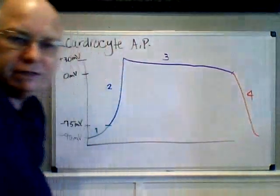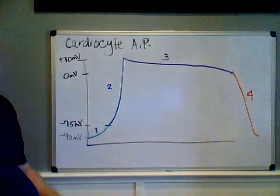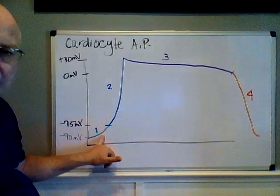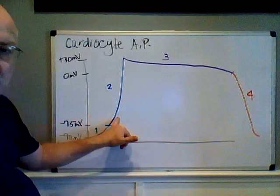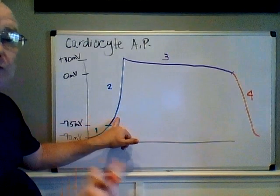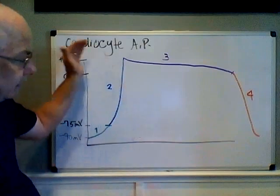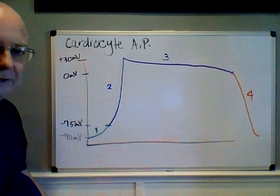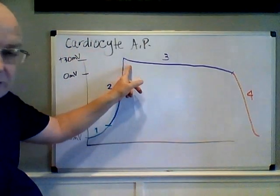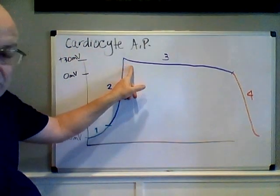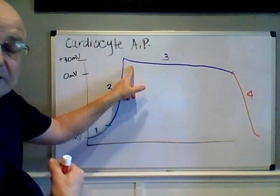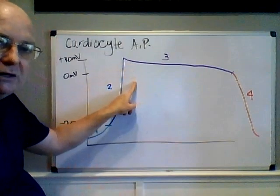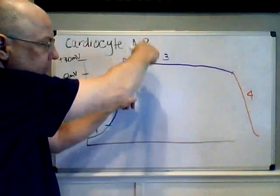The first step is depolarization to threshold due to leaky sodium channels. The second step is rapid depolarization due to voltage-gated sodium channels opening and sodium influx rushing into the cell. When the sodium channels close and the potassium channels begin to open letting potassium leak out, rather than dropping straight down — because calcium is leaking in counterbalancing that — we see almost a flattening or plateau stage.